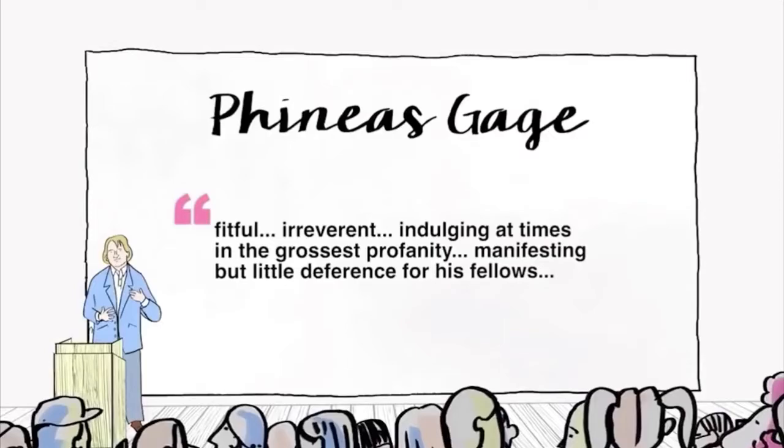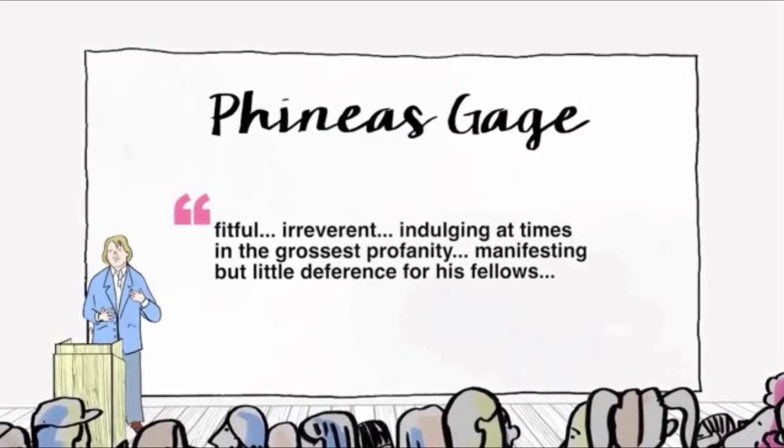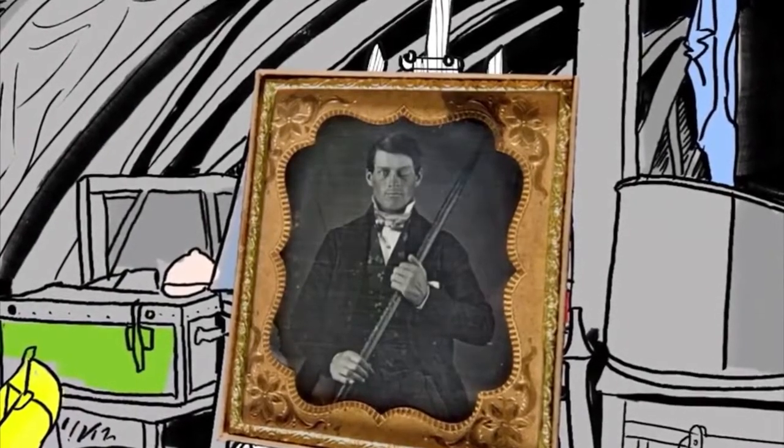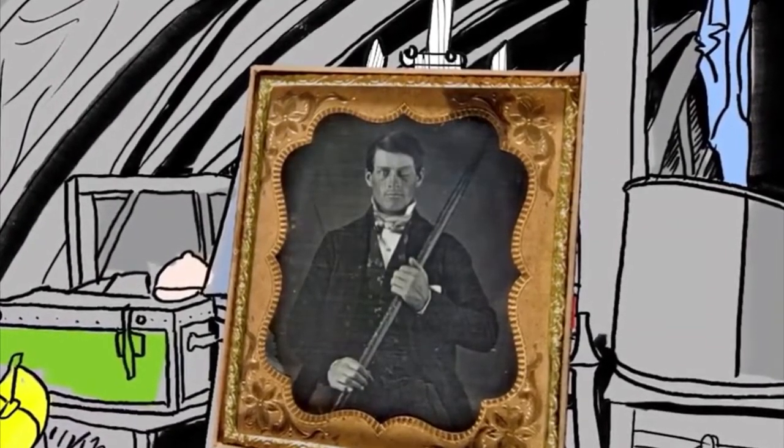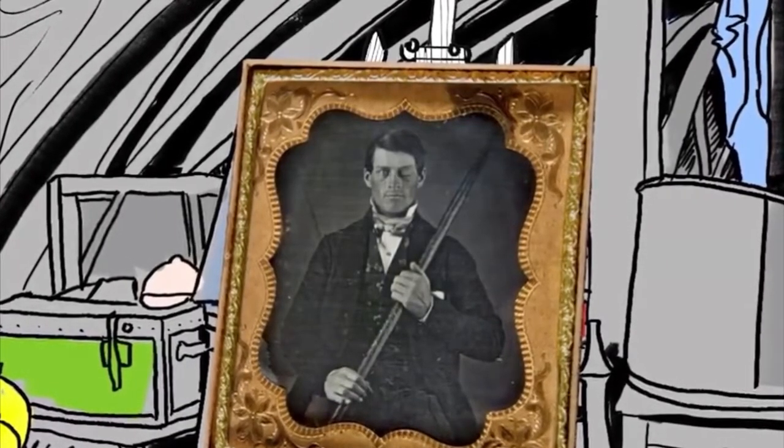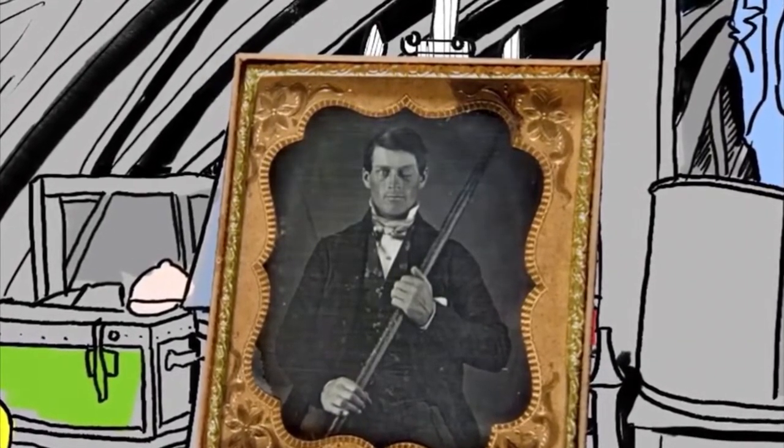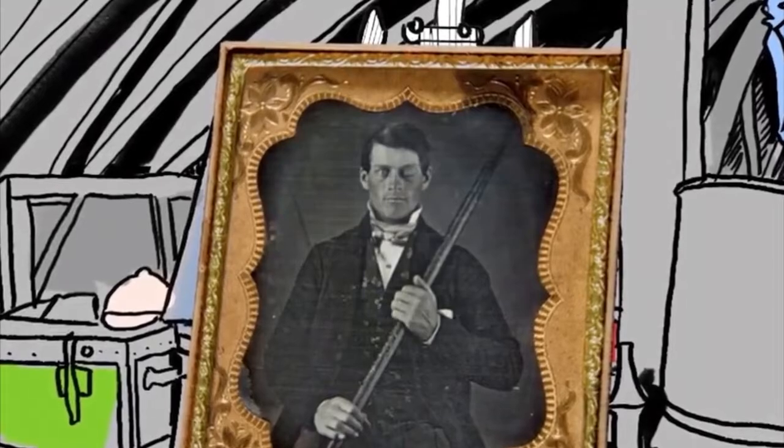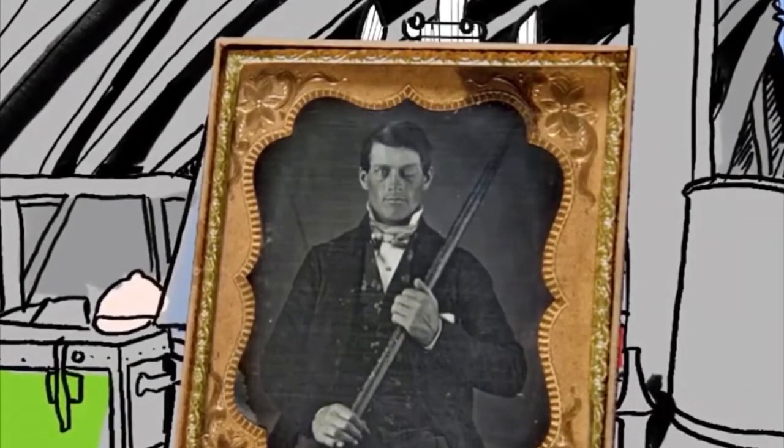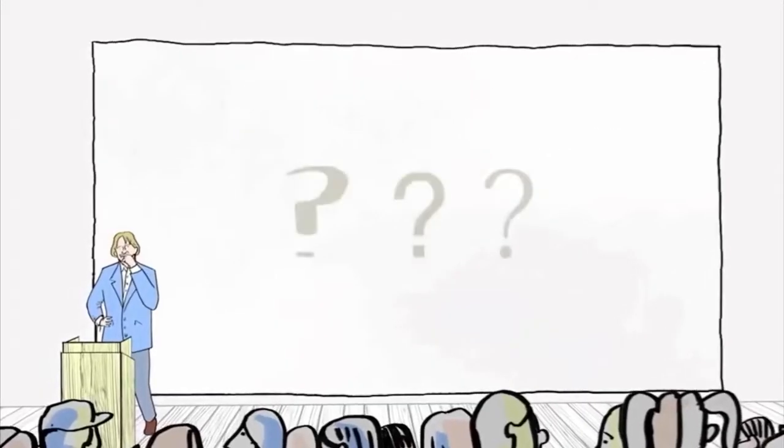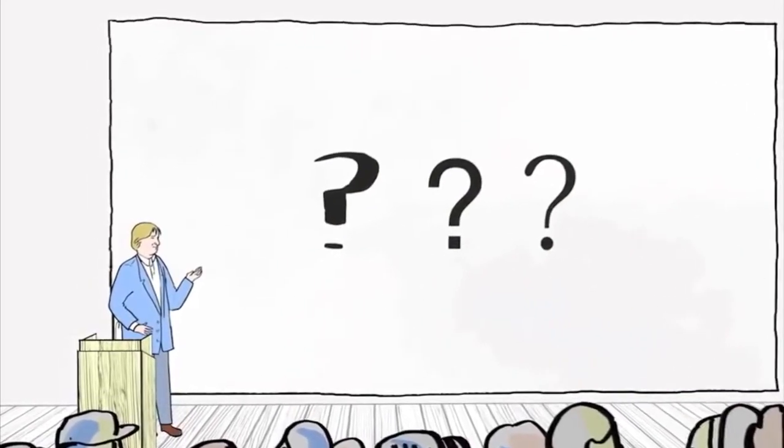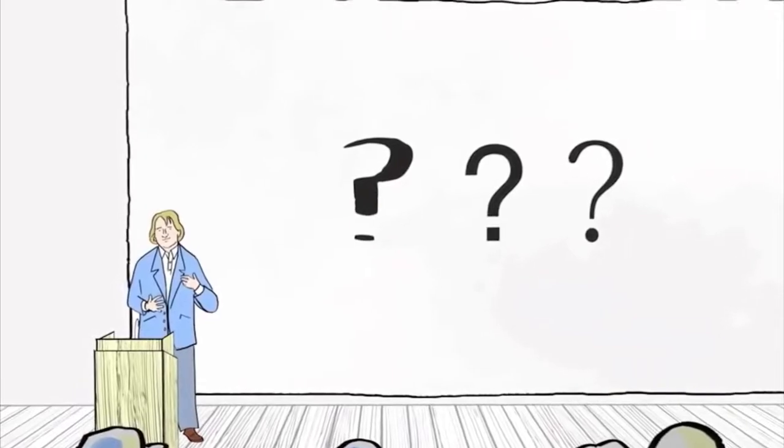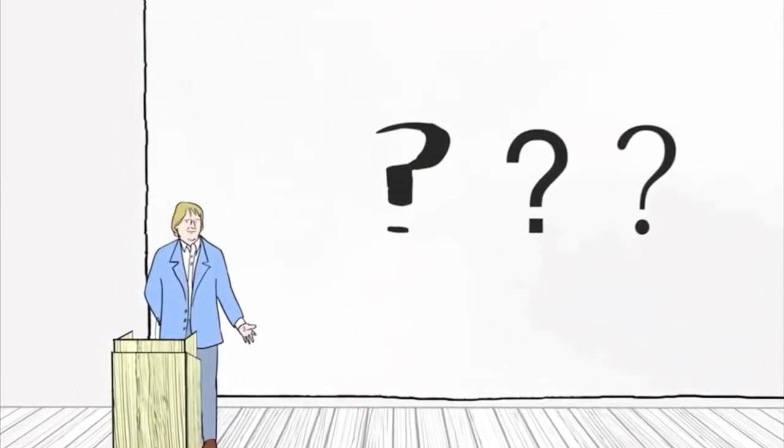He was fitful, irreverent, indulging at times in the grossest profanity, manifesting but little deference for his fellows. He ended up losing his job, he traveled through the states, taking up different jobs, engaging in different relationships, and ultimately ended up as an exhibit in a traveling circus, holding the tamping iron and telling people about this terrible story about how it went through his head and went through his brain and changed his life.